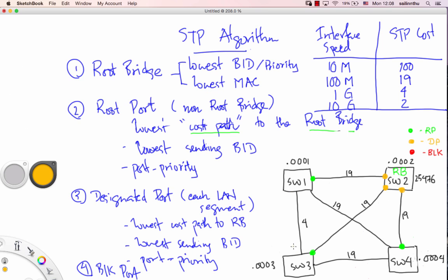The lowest sending bridge ID. Switch 1, the solution is Switch 2. You send it to Switch 1. If you send it to Switch 3, you put the port in the city, a solution 0003.